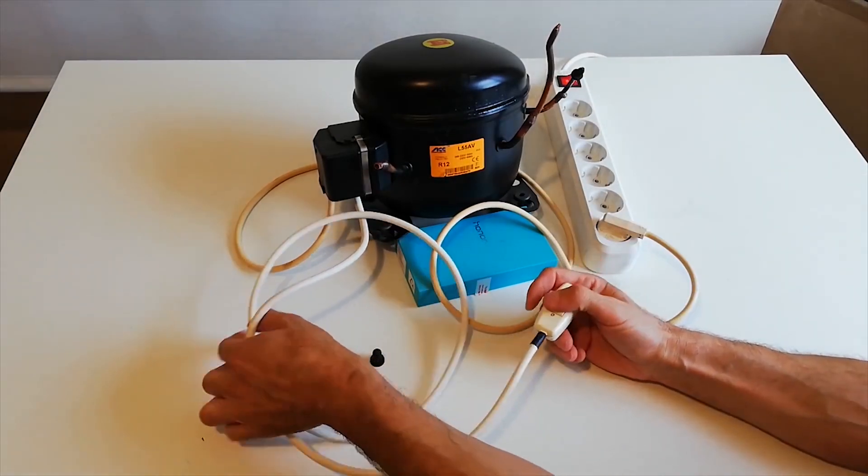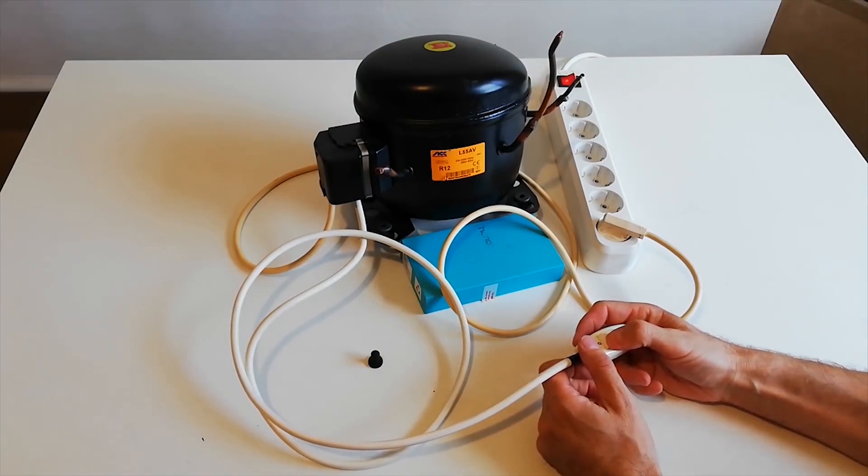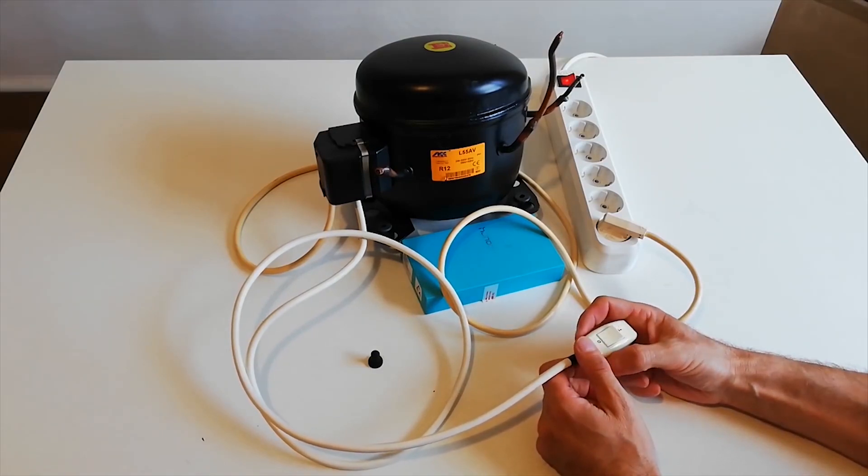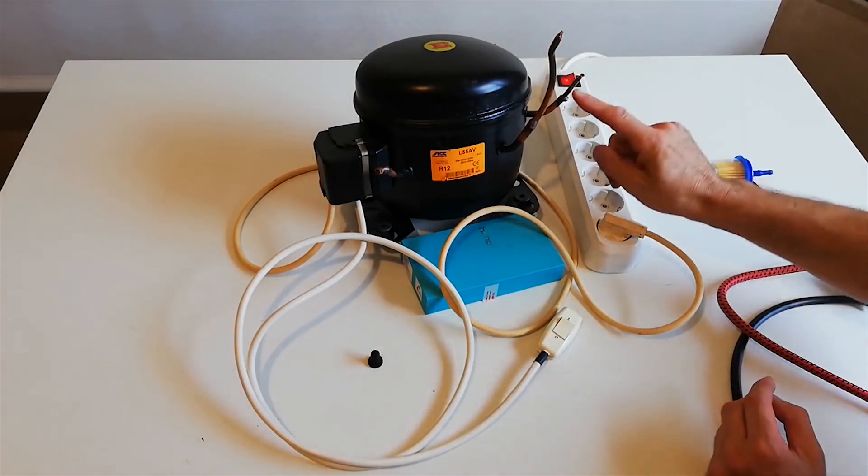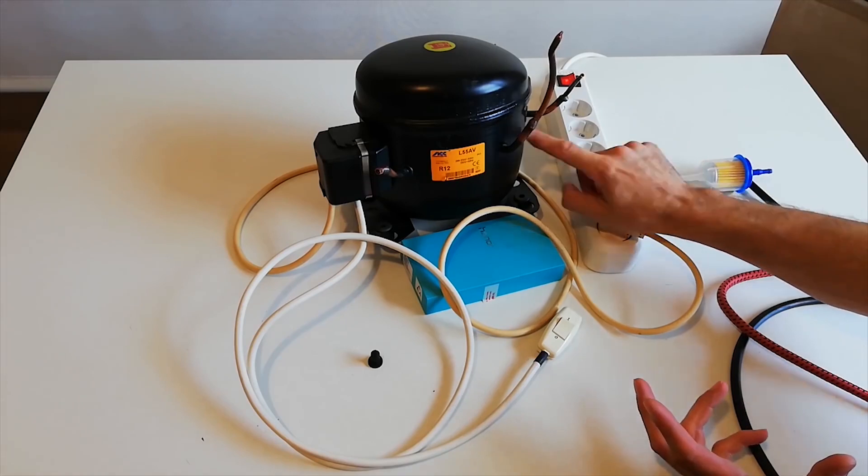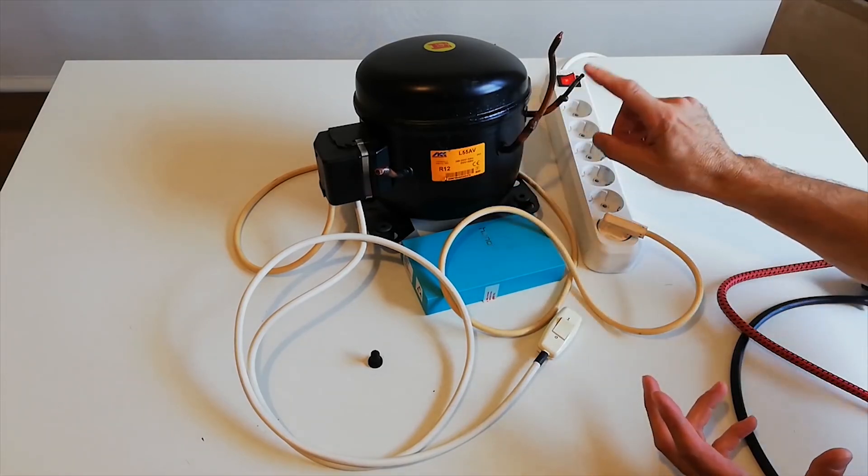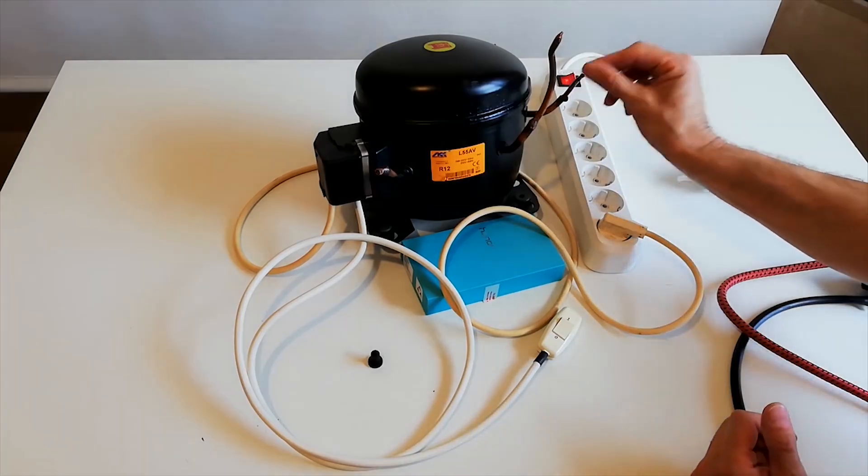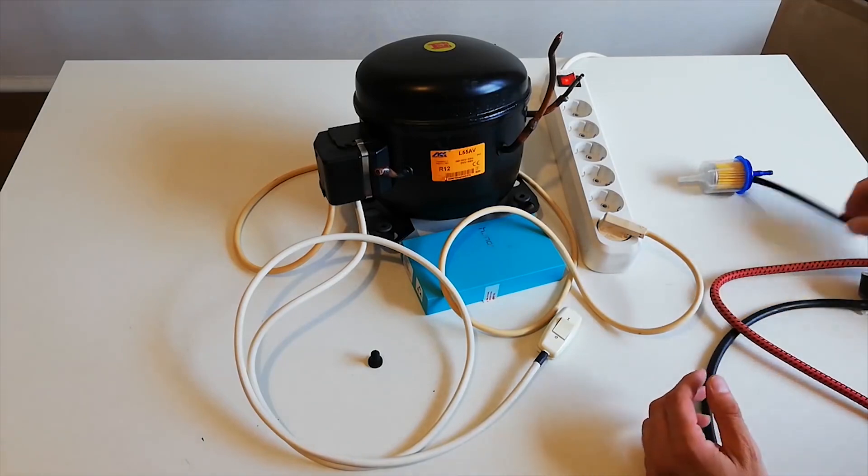This is our switch with which we can turn on our compressor. Oil from the compressor itself also comes out through the discharge line. So for such purposes, it is necessary to put one air filter on the pressure pipe. That's what we're going to do now.